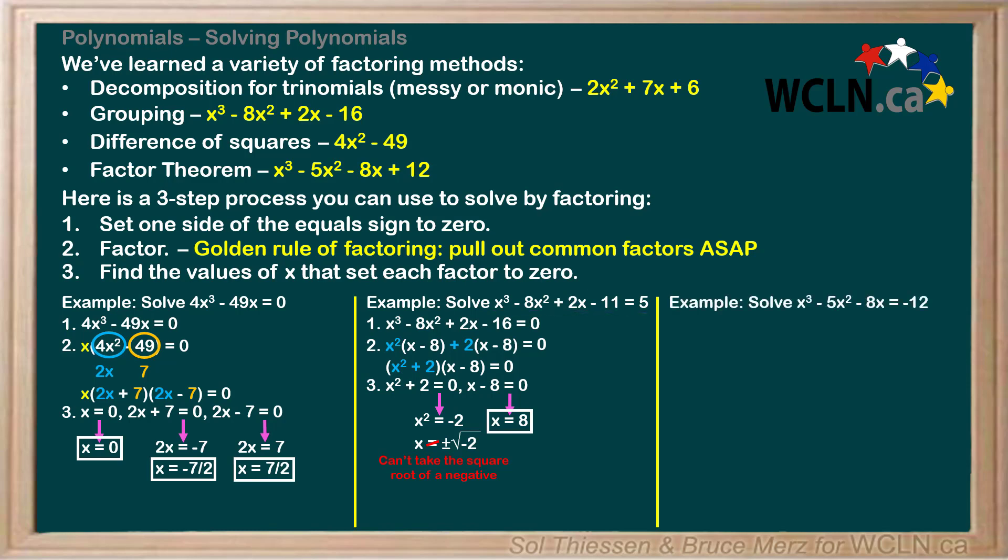Onto our last example, solve x³ - 5x² - 8x = -12. Step 1 is to set one side of the equal sign to 0, so we have to add 12 to both sides to give us this equation. Notice that this expression matches the example above for factoring by using the factor theorem. Hopefully you're familiar with how to do so.